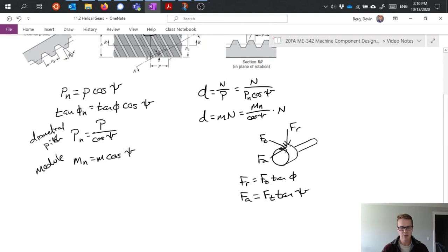Remember the teeth go kind of like this rather than straight across, and this F sub T then is coming in at an angle. But if we instead put a force on here we could call that F sub B, and if I write that out basically like a bending force, we get something like that: F sub T over the cosine of psi.